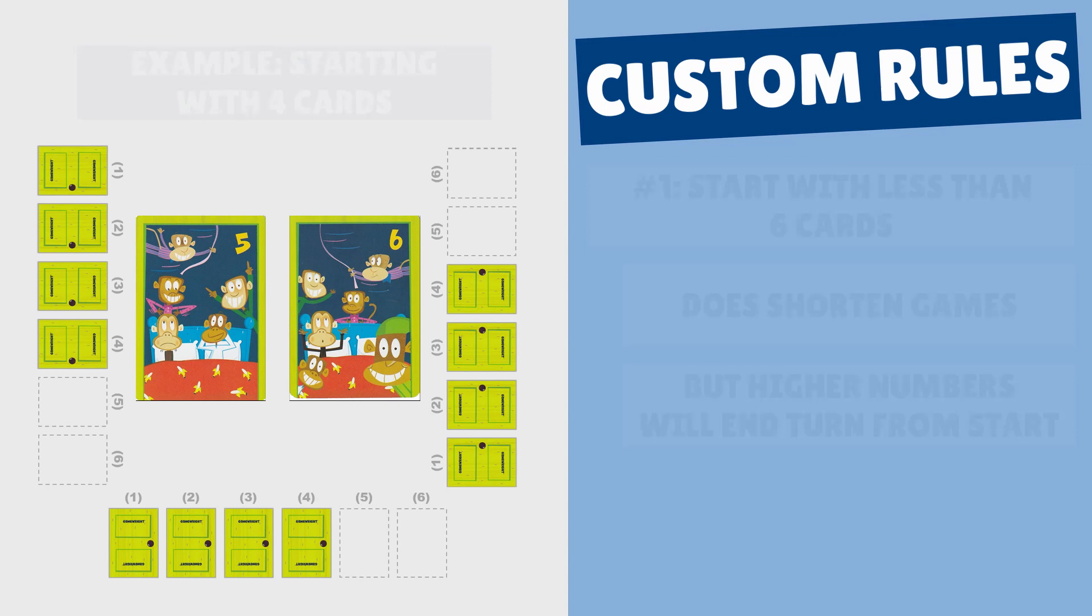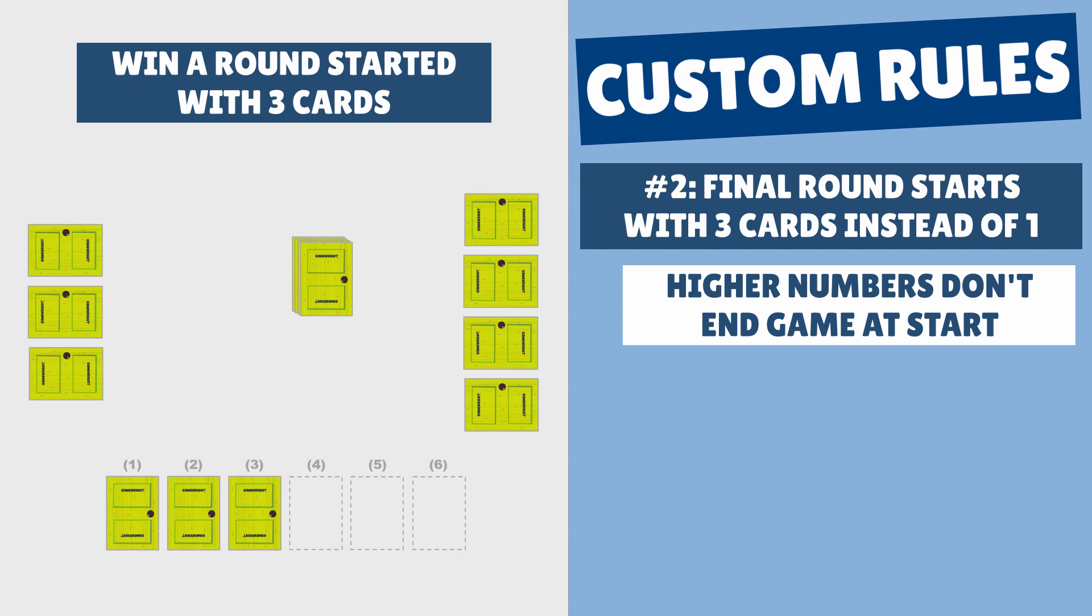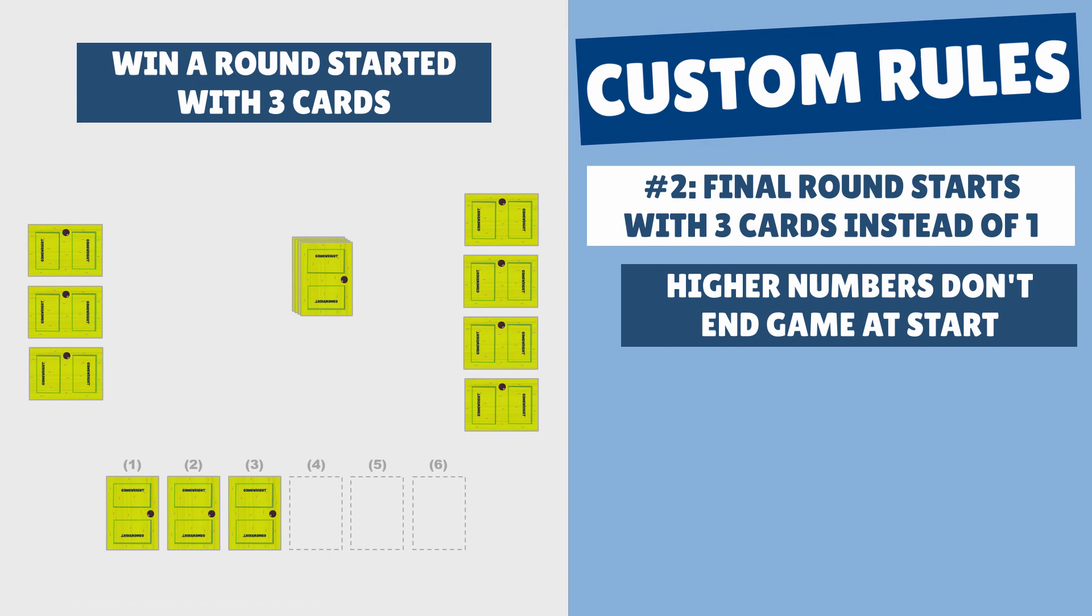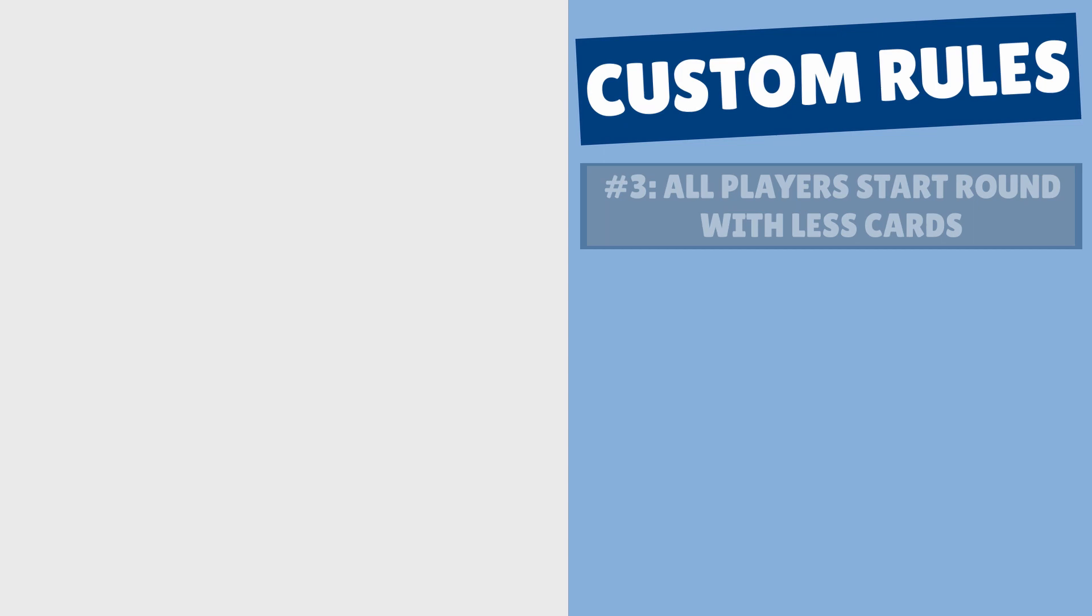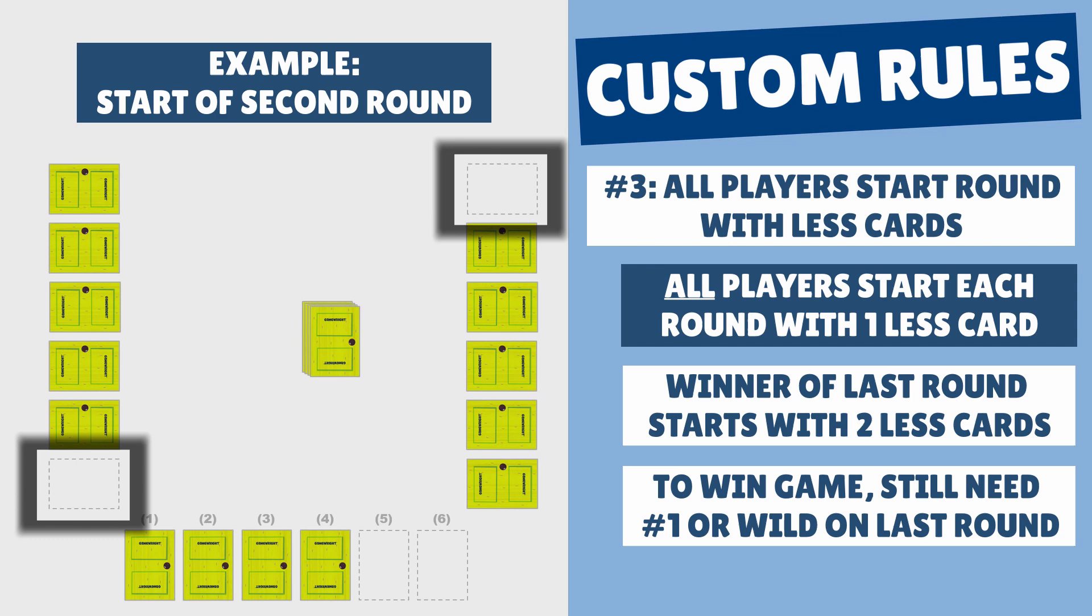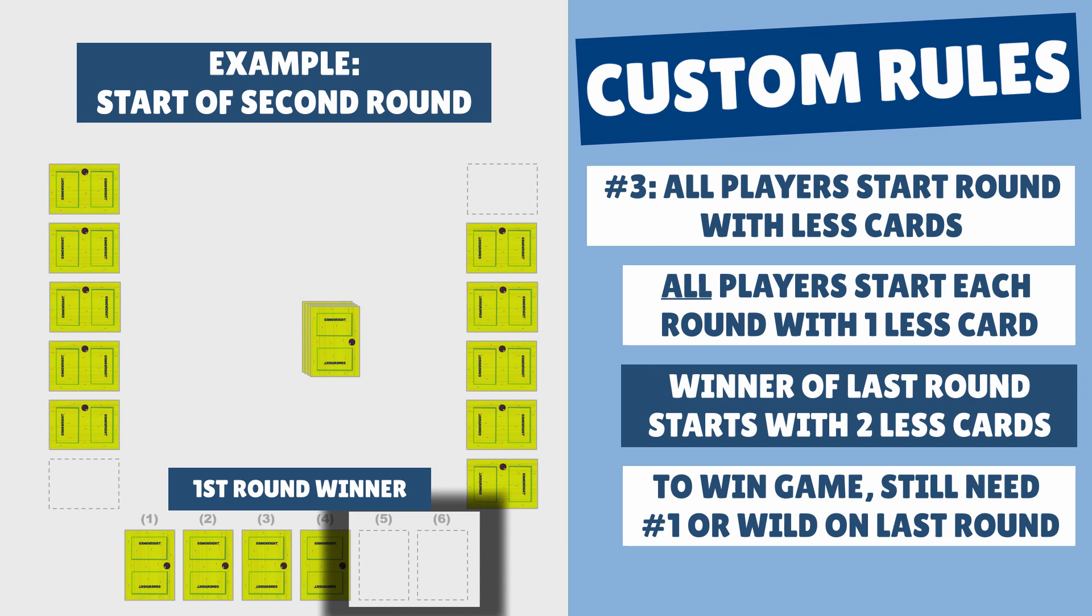The second way is to have someone win the game when they win a round they started with three cards instead of one. This way, the higher numbers are still used and it's more like a normal game. But the third way to shorten the game might be the most fun. Here, all players start each round with one less card than the round before. And the winner of the last round gets to start with two less. To win the game though, you still need to get a number one or wild card on your last round.